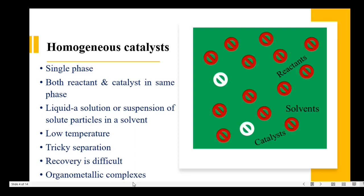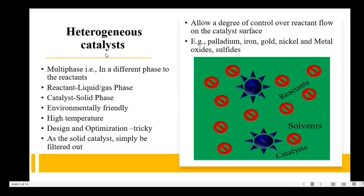The second process is heterogeneous catalysis. Here the reactants and the catalysts are in different phases — reactants are in liquid or gas phase and the catalysts are in solid phase, so they are multi-phase materials. The heterogeneous catalyst process is an environmentally friendly process. The reaction takes place at a higher temperature. However, the design and optimization is very tricky, but recovery is very simple since the catalyst is in solid form — it can be easily filtered out. It allows a degree of control over reactant flow on the catalyst surface. Examples are palladium, iron, gold, nickel, metal oxides and metal sulfides.